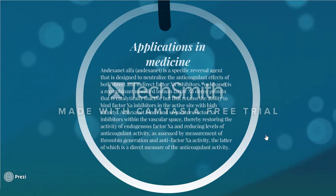Dexanet alpha is a specific reversal agent designed to neutralize the anticoagulant effects of both direct and indirect factor Xa inhibitors. Dexanet is a recombinant modified human factor Xa decoy protein that is catalytically inactive but retains the ability to bind factor Xa inhibitors in the active site with high affinity. Dexanet binds and sequesters factor Xa inhibitors within the vascular space, thereby restoring the activity of endogenous factor Xa and reducing levels of anticoagulant activity, as assessed by measurement of thrombin generation and anti-factor Xa activity, the latter of which is a direct measure of anticoagulant activity.